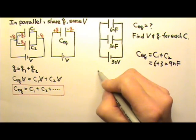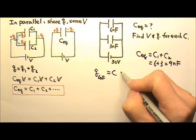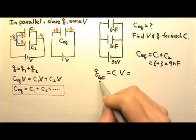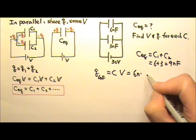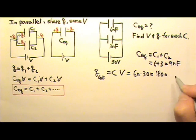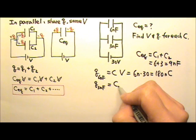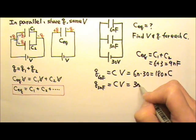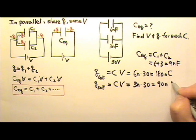Therefore, Q equals CV. The charge on the 6nF would be C, 6nF times the voltage, 30V. So we get 180 nC. The charge on the 3nF, also C times V, 3nF times 30V. So it's 90 nC.